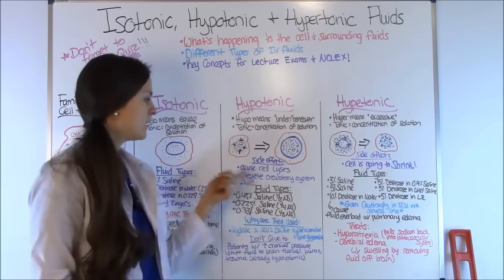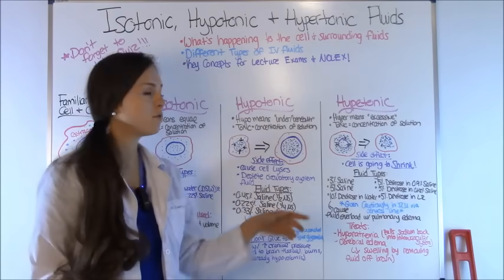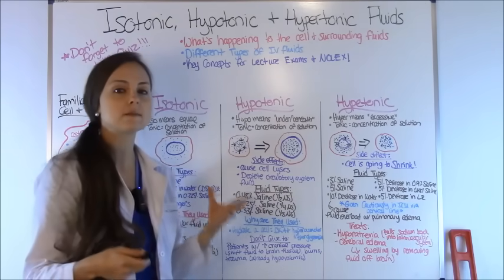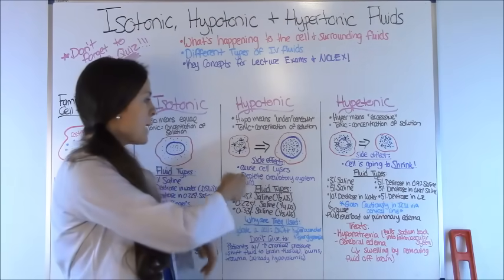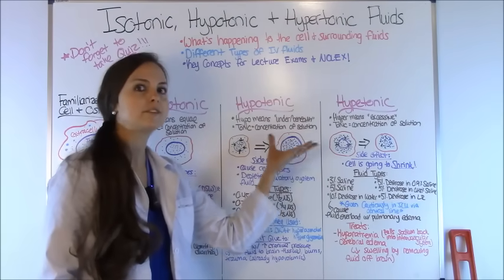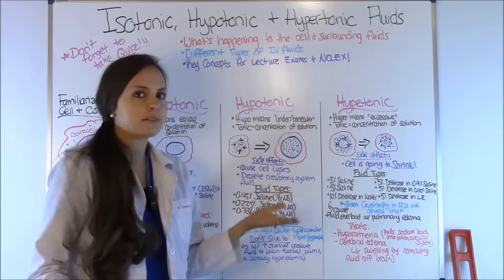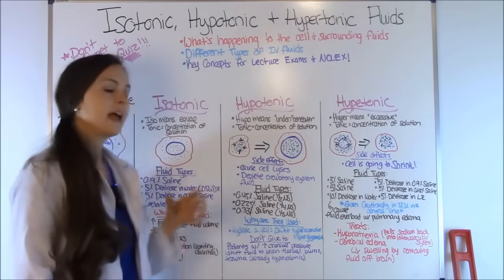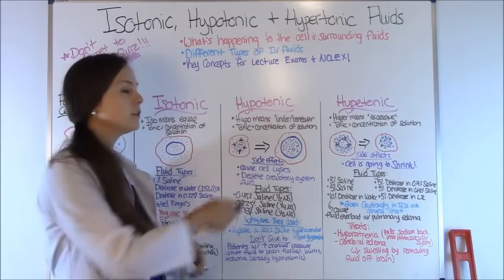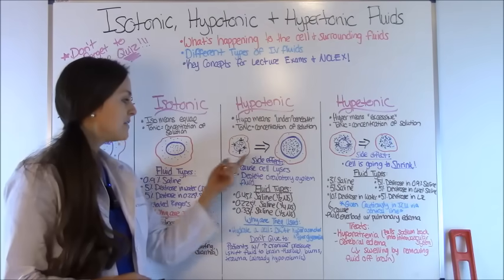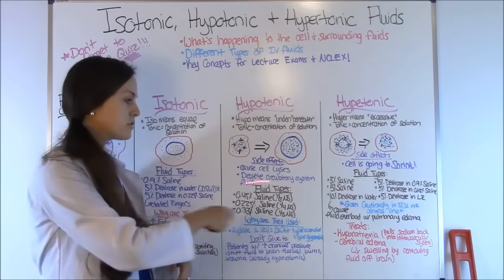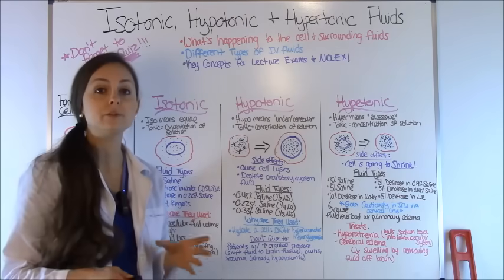Side effects include cell lysis. Another thing to watch out for is that you can deplete the circulatory system's fluid — making the patient hypovolemic — because all the fluid in the blood is leaving and entering the cell. In the hospital setting, we do sometimes give patients hypotonic fluids because they have dehydrated cells, but you must watch the circulatory volume carefully.